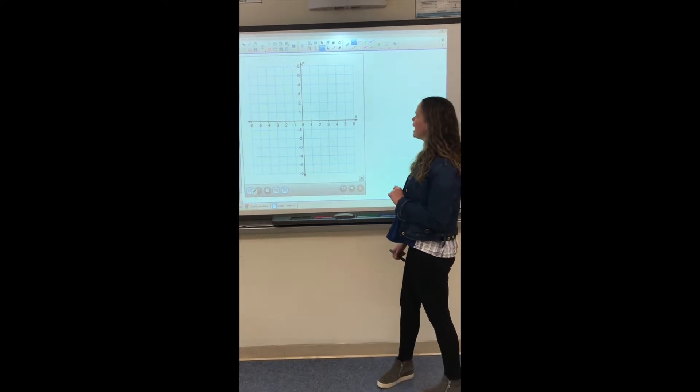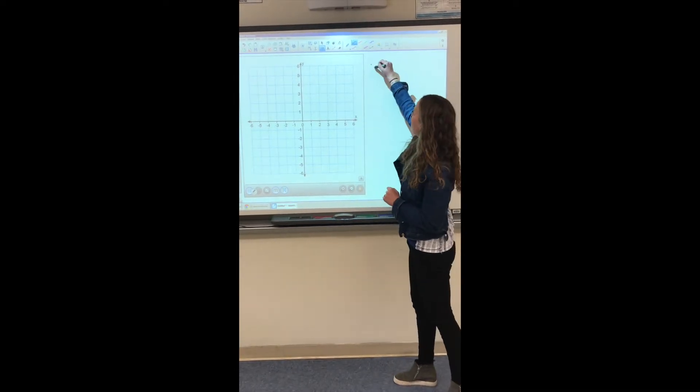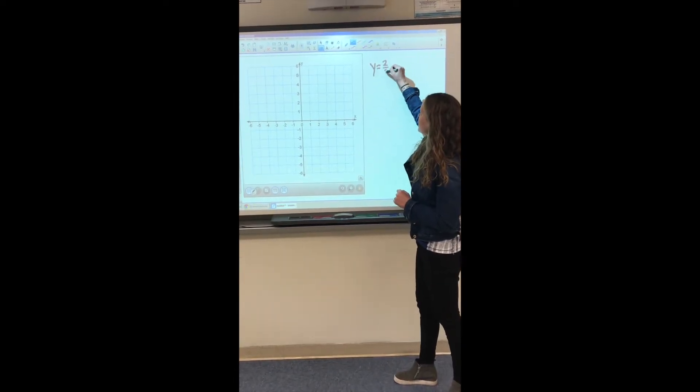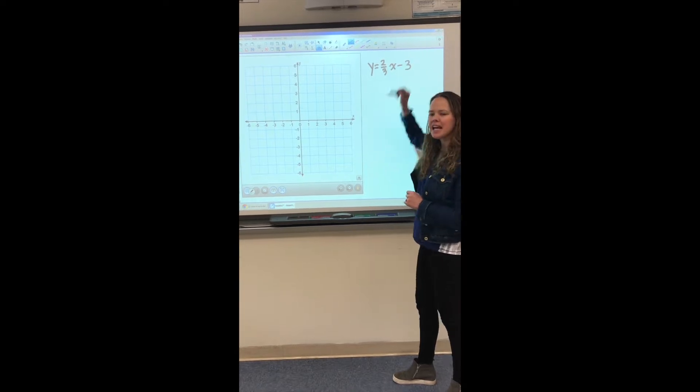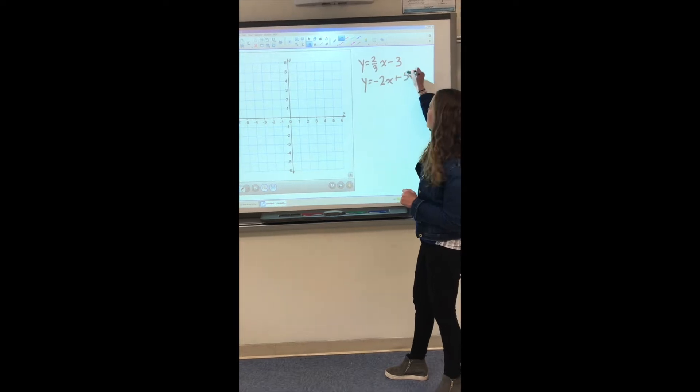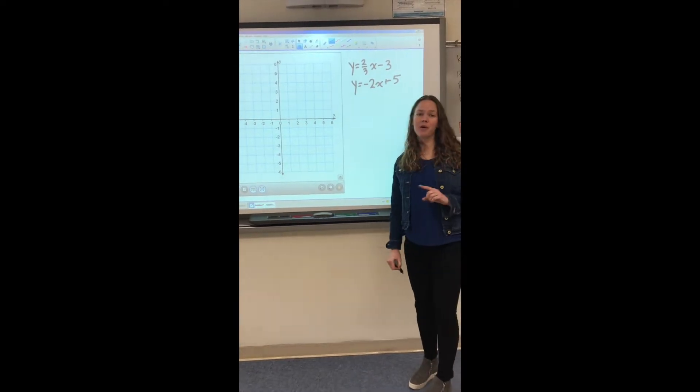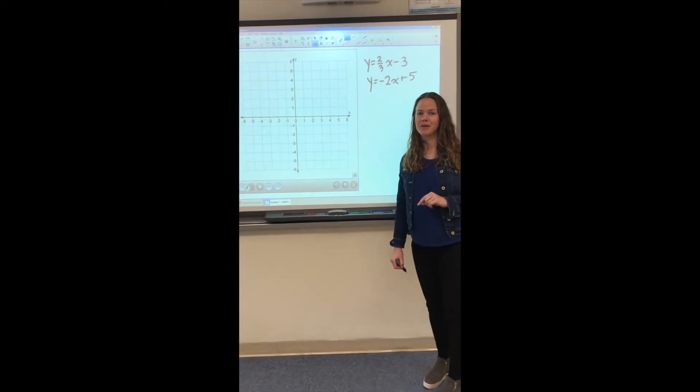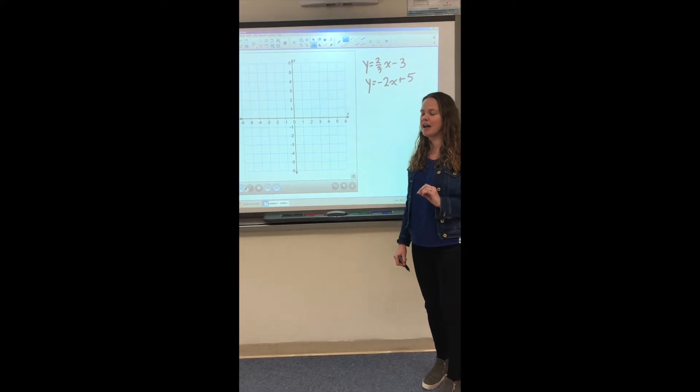So our first problem, we have the system of y is equal to 2 thirds x minus 3, and we also have y is equal to negative 2x plus 5. Now, lucky for us, both of these equations are in slope-intercept form, so it's easy to graph these.